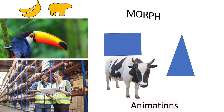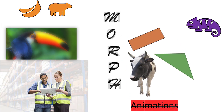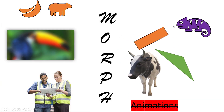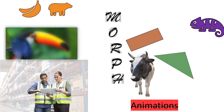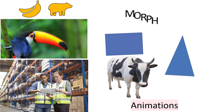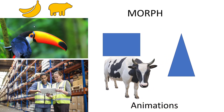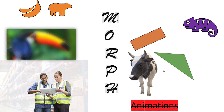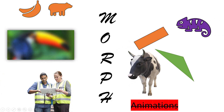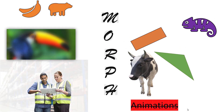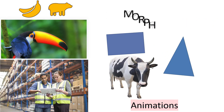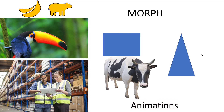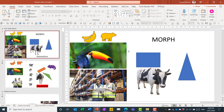Forget PowerPoint animations because Morph does everything but much easier and much slicker. It handles text, images, icons, recoloring, moving, rotating, 3D objects, underlining, and changing fonts. All of this can be done through one command: PowerPoint Morph.